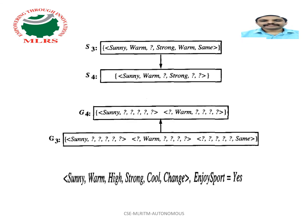The fourth training example, which is a positive example, further generalizes the S boundary of the version space. It also results in moving one member of the G boundary because this member fails to cover the new positive example.